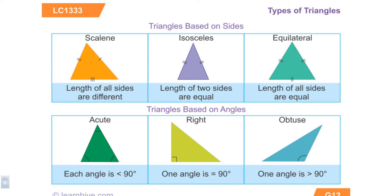An obtuse angle is greater than 90 degrees but less than 180, so an obtuse triangle has one obtuse angle and the others are acute. To summarize: if all angles are acute it's an acute triangle; if two are acute and one is right, it's a right triangle; and if two are acute but one is obtuse, we call that an obtuse triangle.